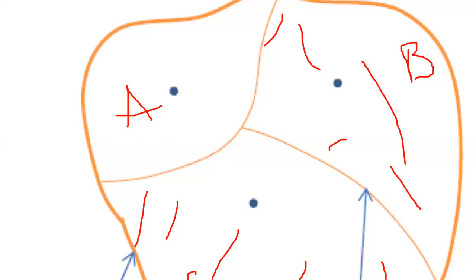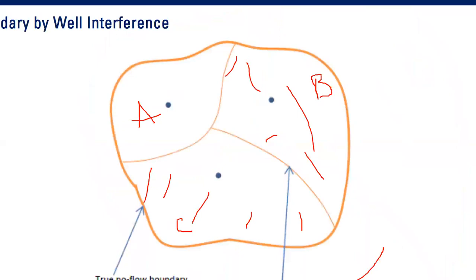Again, boundary - it's not about only structural or stratigraphic boundary, especially when we want to interpret pressure transient analysis or rate transient analysis. We are also dealing with this kind of boundary, no-flow boundary generated by well interference or the virtual no-flow boundary.